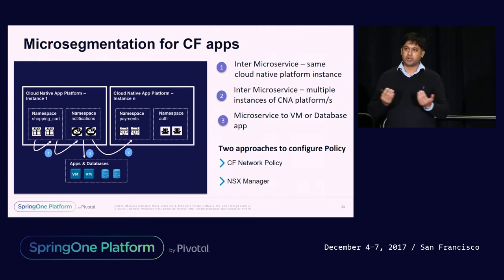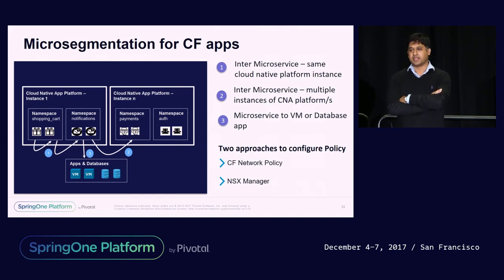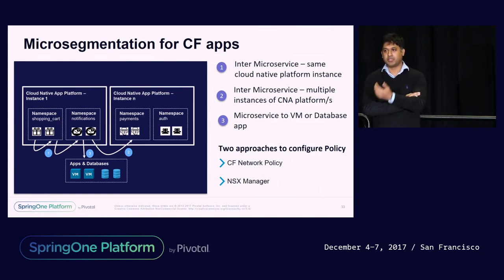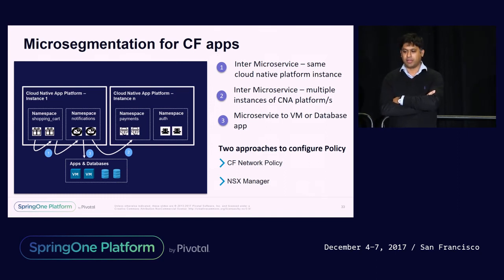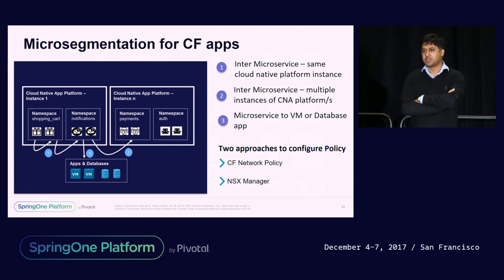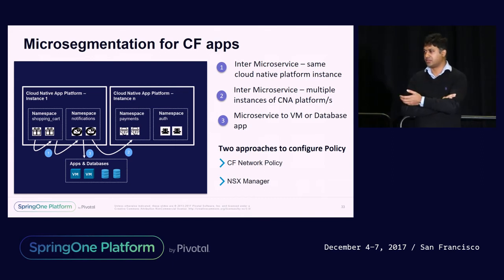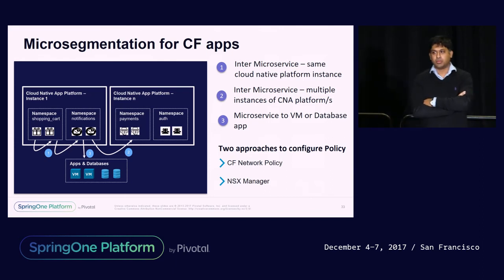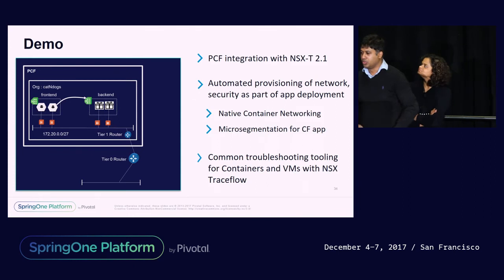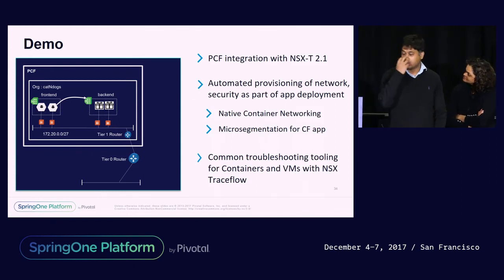We're supporting two different approaches to configuring security. One is using Cloud Foundry as the source of truth and using the CF Network Policy API. The other is using NSX Manager or NSX APIs directly — preferred by operations teams who want to configure security across both traditional and modern apps. When we release this integration in a few weeks, we'll support both NSX Manager/APIs and CF network policy.